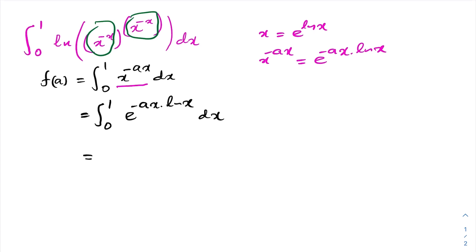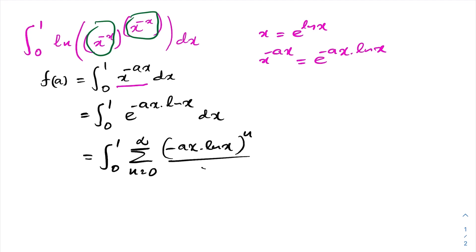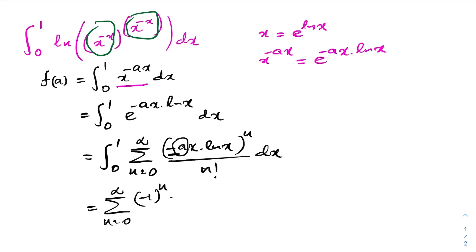Now, the exponential function we can represent as an infinite series. So we have the sum from n equals 0 to infinity of minus a times x natural log of x raised to the n power over n factorial, dx. Then we can switch the integral sign and sigma notation. So we have the sum from n equals 0 to infinity of minus 1 to the n power, times a to the n over n factorial, times the integral from 0 to 1 of x to the n times natural log of x, dx.